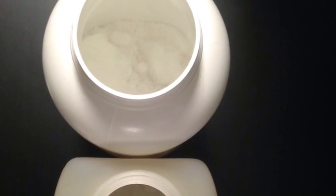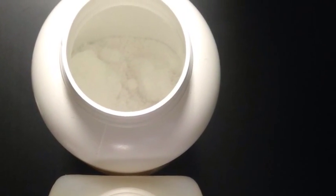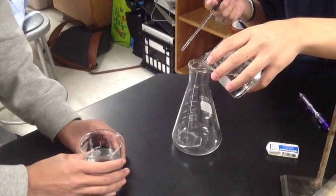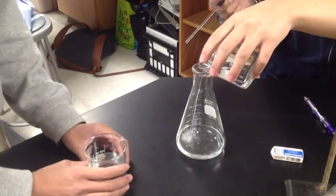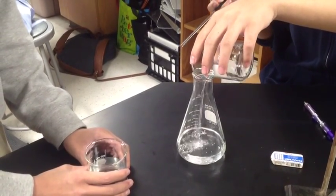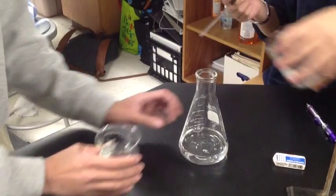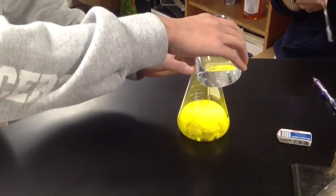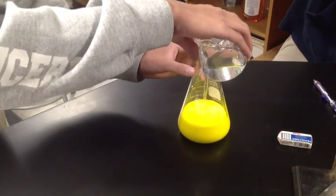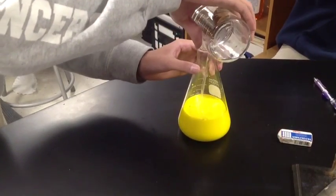Both lead nitrate and potassium iodide are white crystals, but when we create solutions they are transparent. Here we are pouring in potassium iodide, and as you see it is clear, but when we add the lead nitrate we get a very bright yellow precipitate forming.